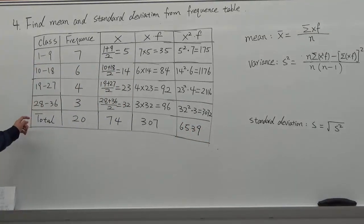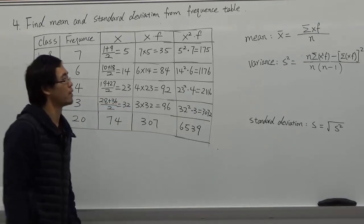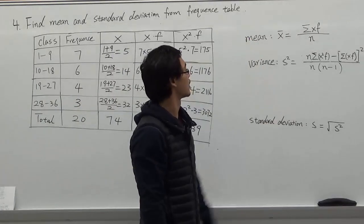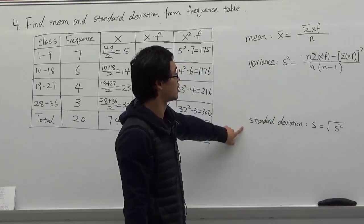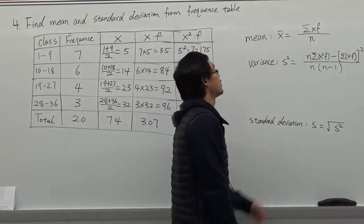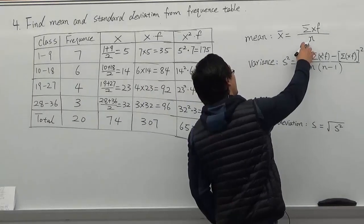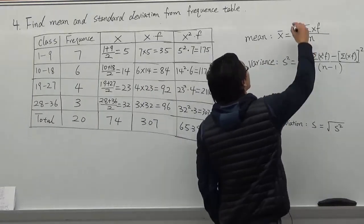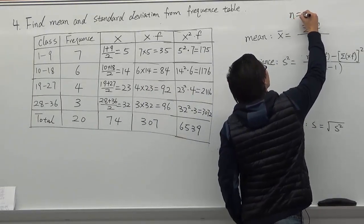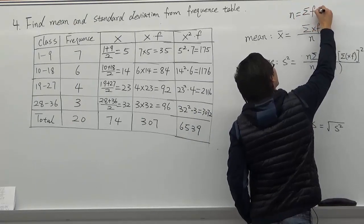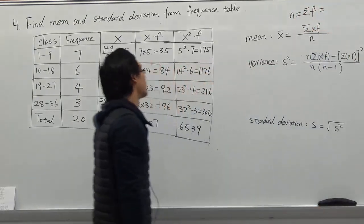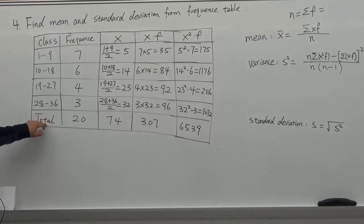After we fill out the total of each column we apply those formulas to figure out what's the mean, variance, standard deviation. So in this formula, it's the n here. What's the n? The n basically equals summation of f. Summation of f means total of the frequency is 20.